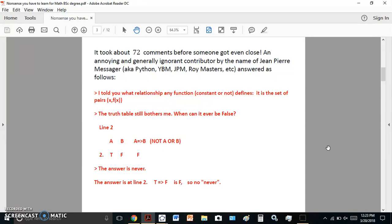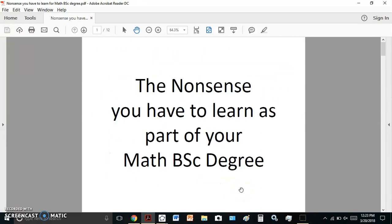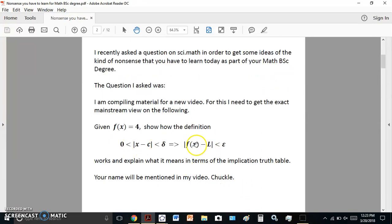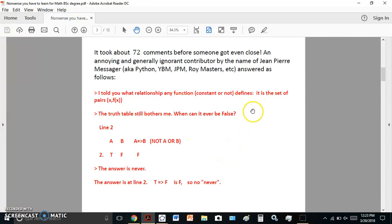And then in this final line here, he agrees that the truth table can never yield the result of false. Otherwise, the first logic statement that you see over here wouldn't work. Right. So let's see.